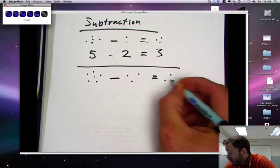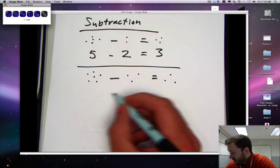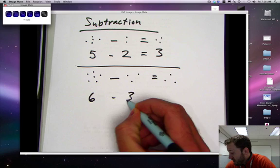Equals three dots. Fabulous. Six minus three equals three.